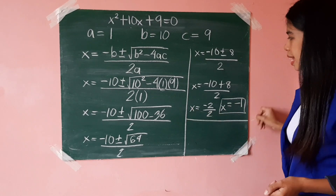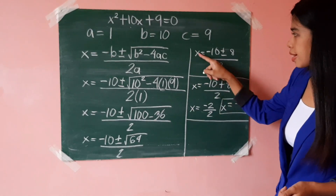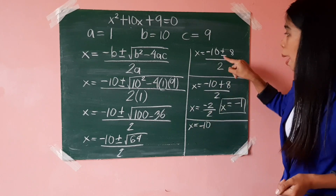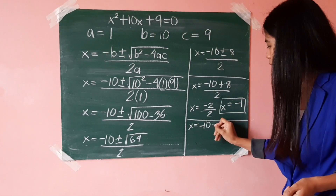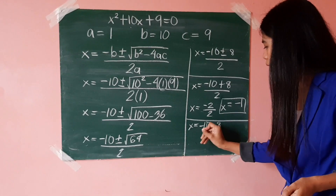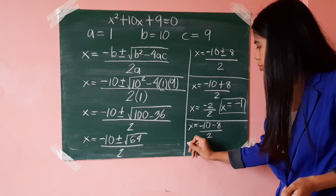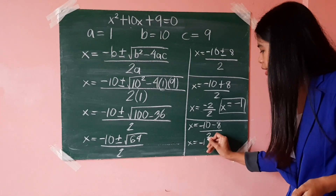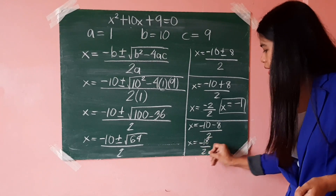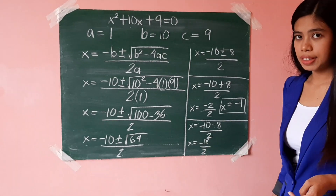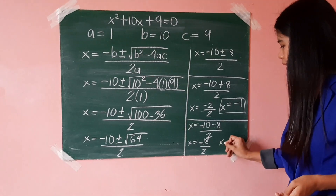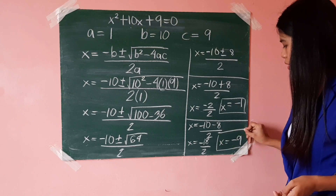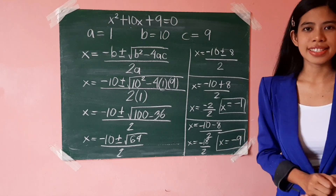For the second value of x, that's negative 10 minus 8, all over 2. Negative 10 minus 8 is negative 18, divided by 2, so negative 18 divided by 2 is negative 9. So the second value of x is negative 9.